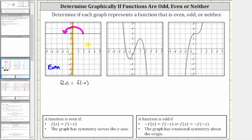Let's test this using a point on the graph. Let's use the point with the ordered pair four comma three. This ordered pair indicates when x is four, the y value or function value is three. So if we sub in four for x, we have f of four must equal f of negative four. We know f of four is equal to positive three. To find f of negative four, we use the corresponding point on the left side of the graph with the ordered pair negative four comma three, which means f of negative four is also positive three. So this does verify the equation works when x equals four.